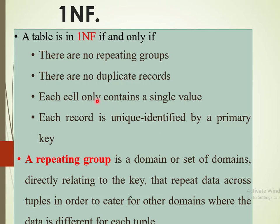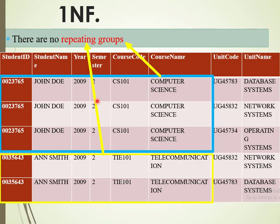When we talk of a repeating group, we are implying that there are going to be a set of fields, or a field, that are relating to the key that have to keep on being repeated so that we can populate other sets of data. We are going to explain each of these rules using an example in the next set of slides.